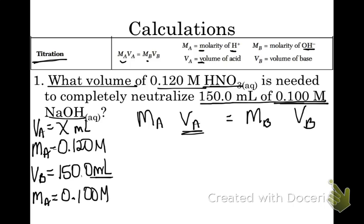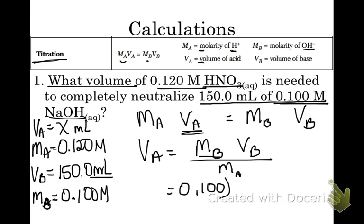VA is our unknown, so we're going to be able to isolate the equation. So we have VA is equal to MB times VB over MA. So let's plug in these values. Your molarity of your base is the first thing here. This is supposed to be molarity of the base: 0.100. Your volume of your base is 150 mL. And that's all divided by the molarity of the acid, which is 0.120 molar.